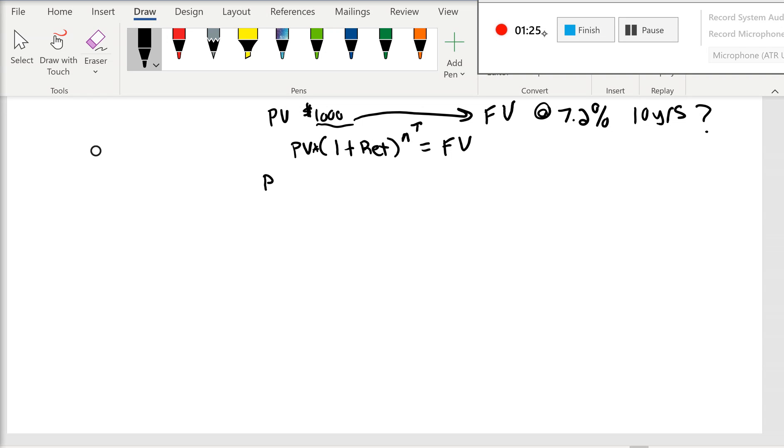Well, the first thing we're going to do is we're going to take our present value times 1 plus 0.072. Why 0.072? Because that's the decimal of 7.2%. And then we're going to say the exponent of 10 years, and that's going to equal our future value.